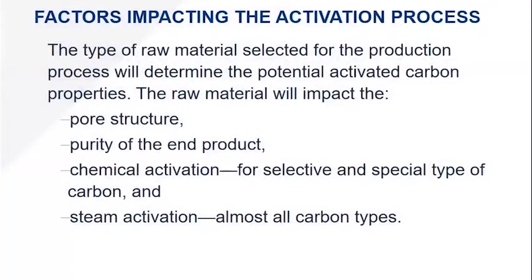So how do we make this product? There are some factors that impact the activation process. The type of raw material selected will determine the activated carbon's properties. The raw material will be impacted by its core structure and the purity of that end product, and whether or not it's going to be a good candidate for chemical activation for selective removal. There are lots of things that carbon manufacturers will do to activate a carbon — putting different chemical functional groups on it to give it more of a focused removal characteristic.